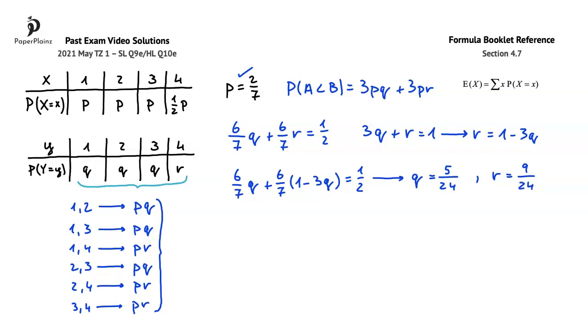In question part D, we use this equation from section 4.7 of your formula booklet to find an expression for EY and we got 6Q plus 4R. From here, we simply have to substitute for Q and R, which gives us 6 times 5 over 24 plus 4 times 9 over 24. So, we end up with 30 over 24 plus 36 over 24, which is 66 over 24, or 11 over 4.